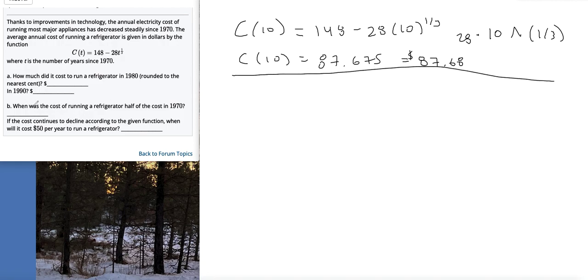So when was the cost of running the refrigerator half of the cost in 1970? If we look at this equation up here, 1970 would mean t was zero, so this whole thing drops out. The cost in 1970 would have been $148. So 148 divided by 2, because we're supposed to figure out what is half of it, that would be $74.